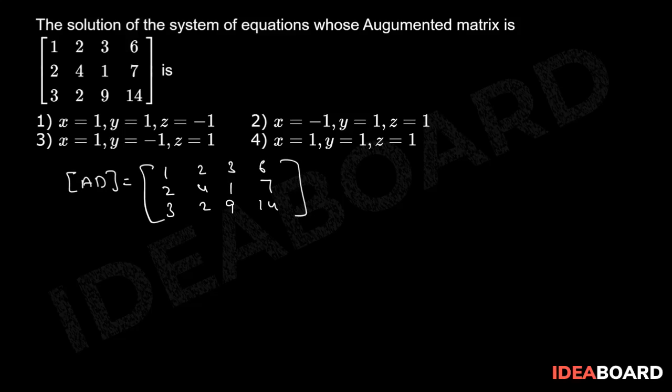14. Now by applying the row operations R2 implies R2 minus 2R1 and R3 implies R3 minus 3R1, this matrix will be equivalent to matrix 1, 2, 3, 6, 0, 0, minus 5, minus 5, 0, minus 4, 0, minus 4.